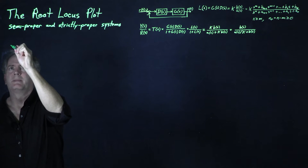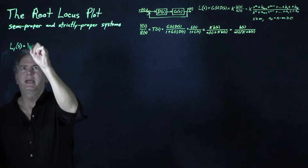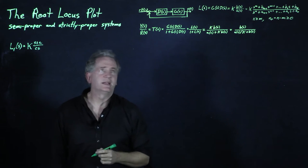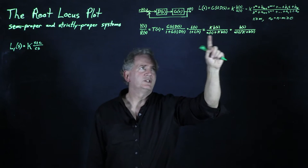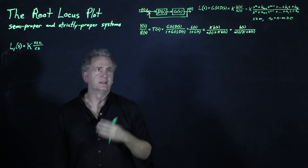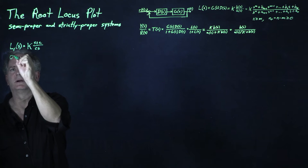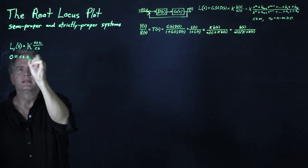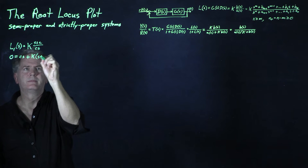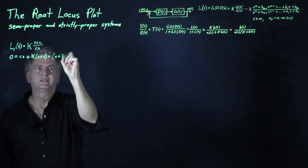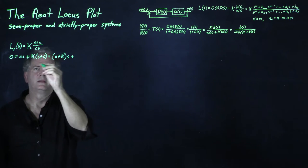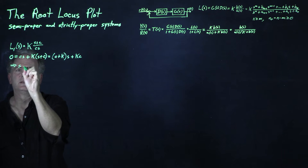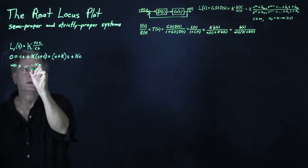The first example is L1(s) = K(s+c)/(cs). Here B(s) = s+c and A(s) = cs. Setting the denominator of T(s) equal to zero gives A(s) + K·B(s) = 0, i.e., cs + K(s+c) = 0, which gives (c+K)s + Kc = 0. Solving for s: s = −Kc/(c+K).